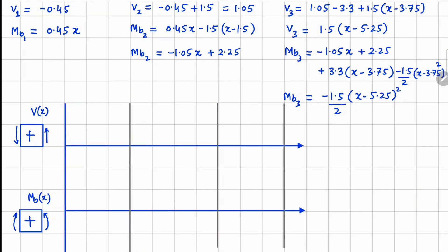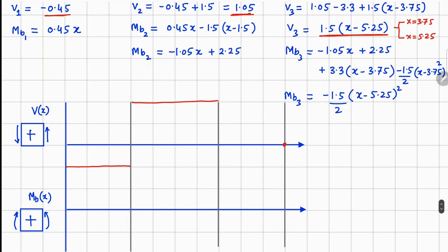Now we draw the axis system and plot the shear force. In Segment 1, we maintain a constant value of −0.45. In Segment 2, a constant value of 1.05. In Segment 3, we evaluate V3 at x = 3.75 giving −2.25 and at x = 5.25 giving 0. Drawing a straight line from here gives the complete shear force diagram. The shaded regions show values of 0.45 and 1.05.